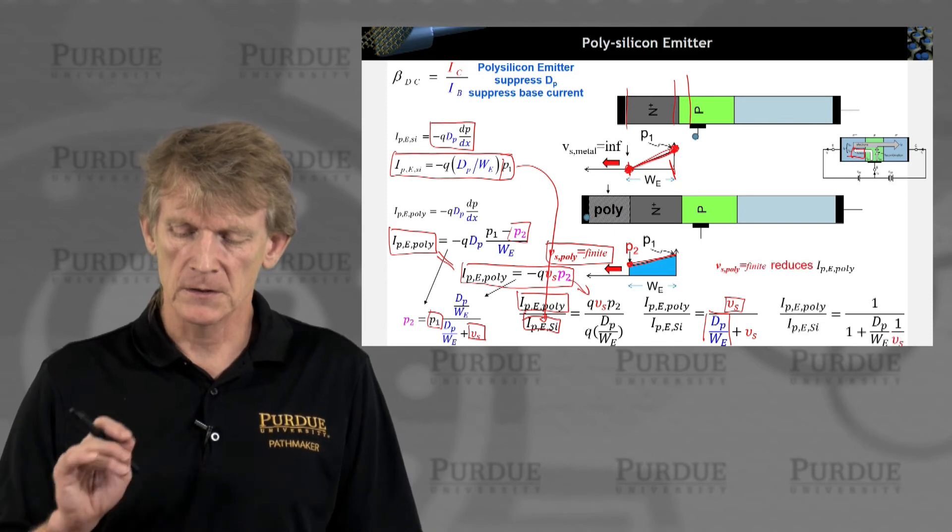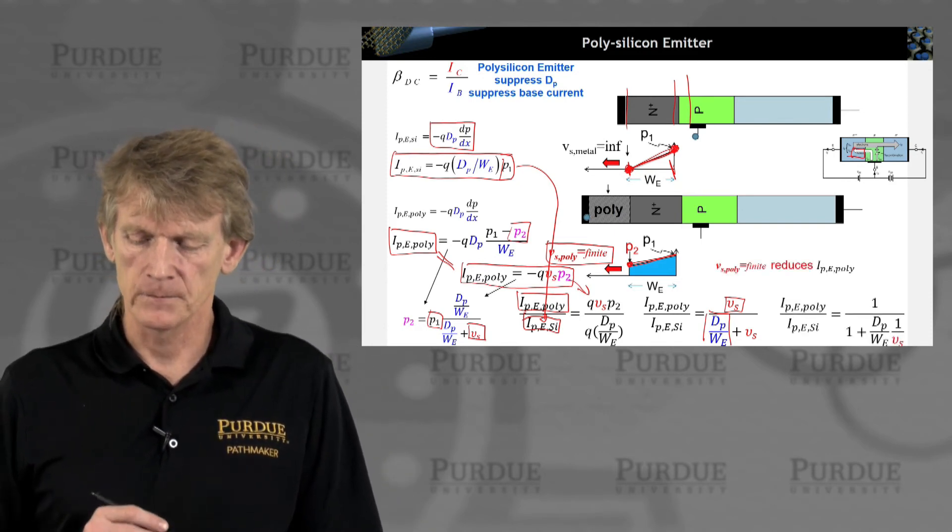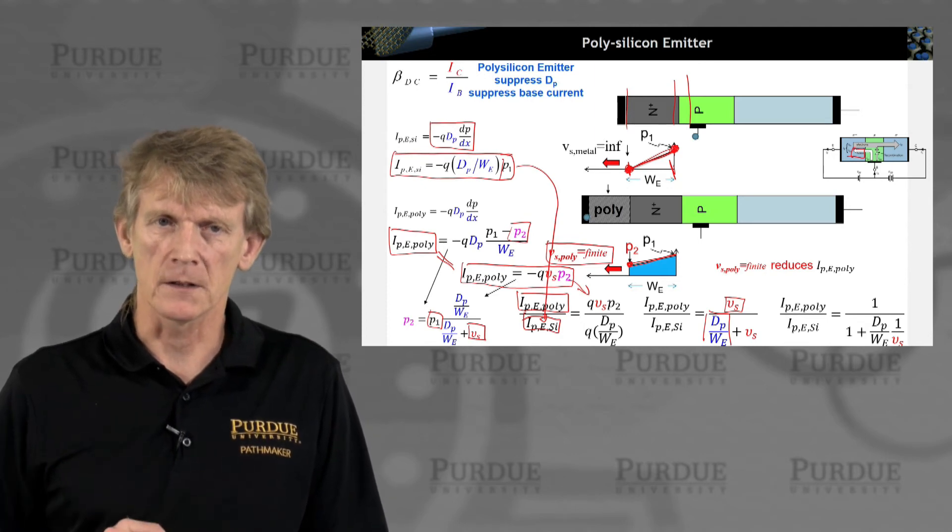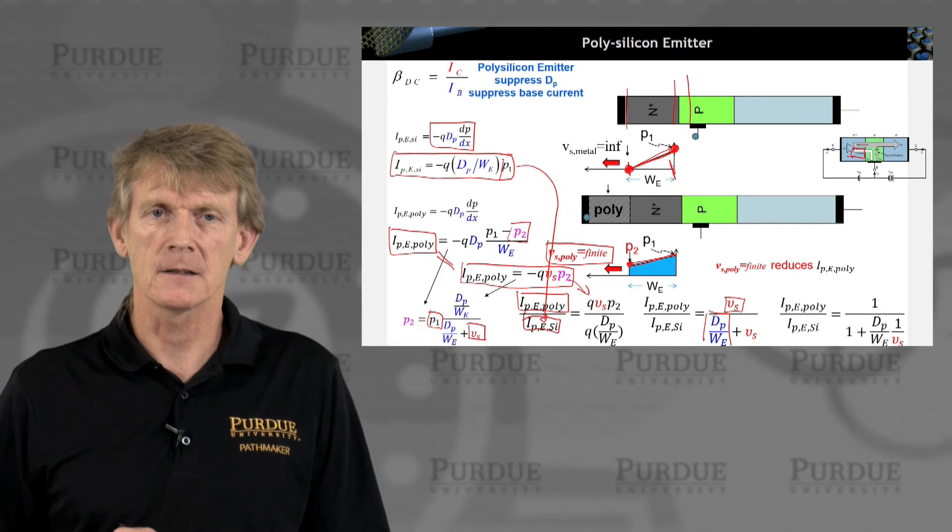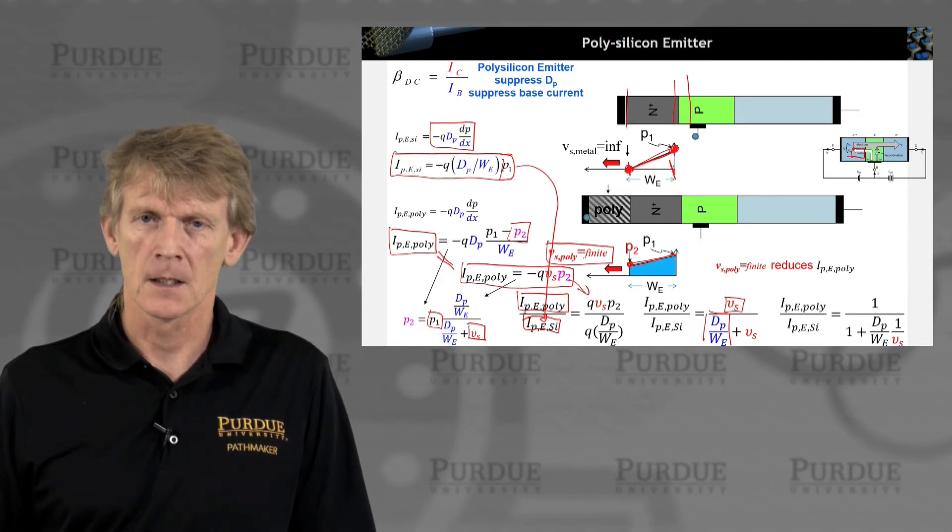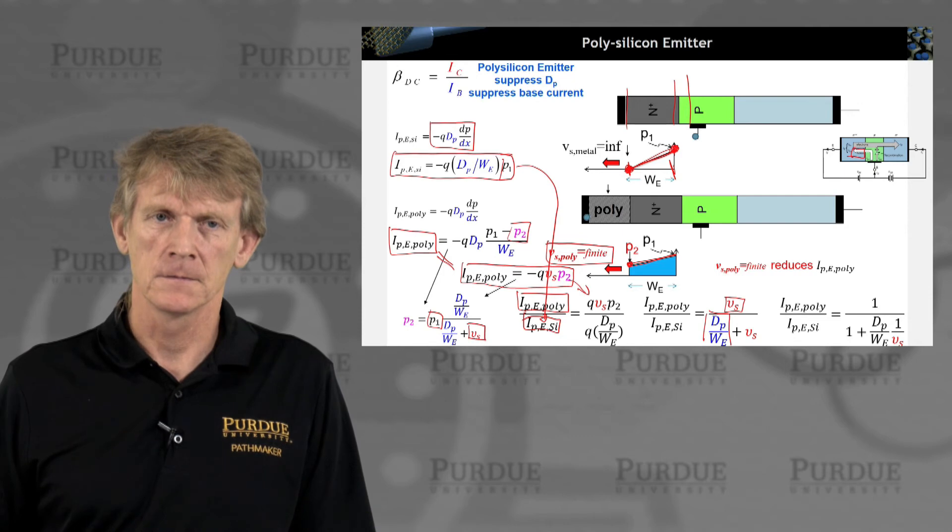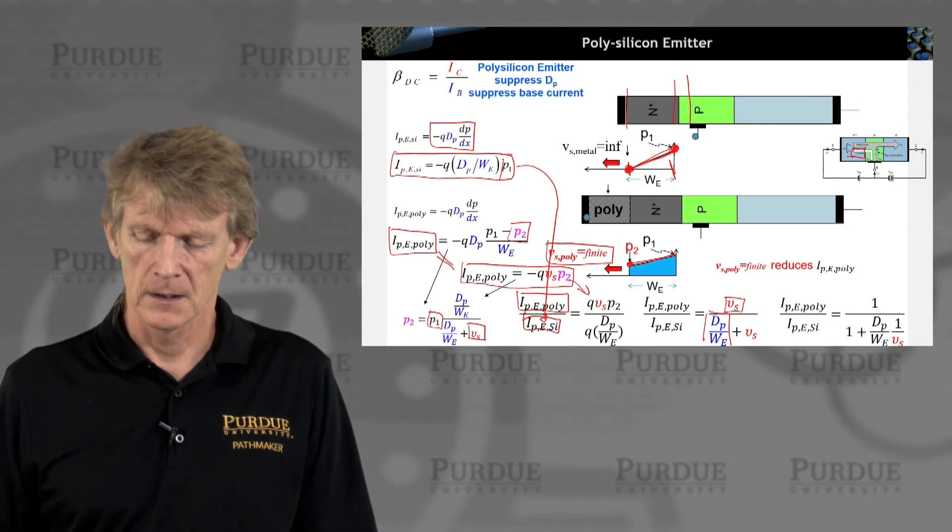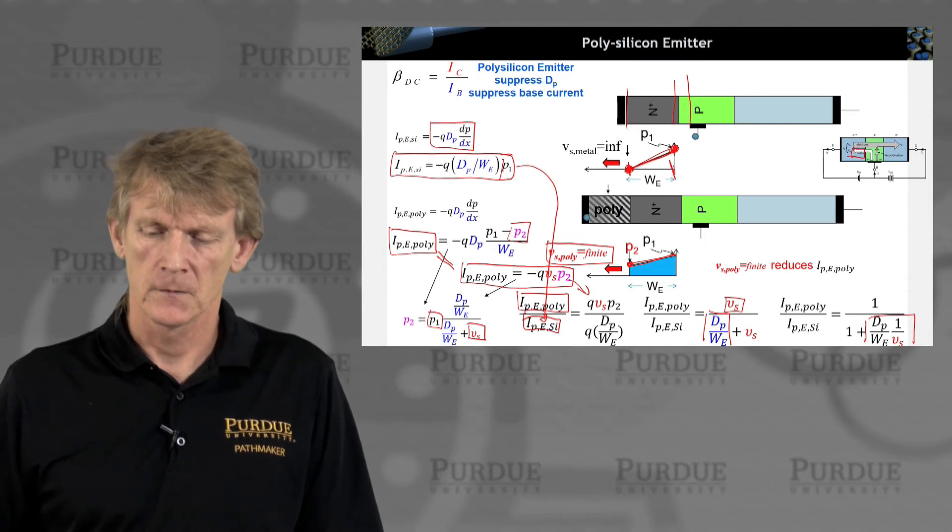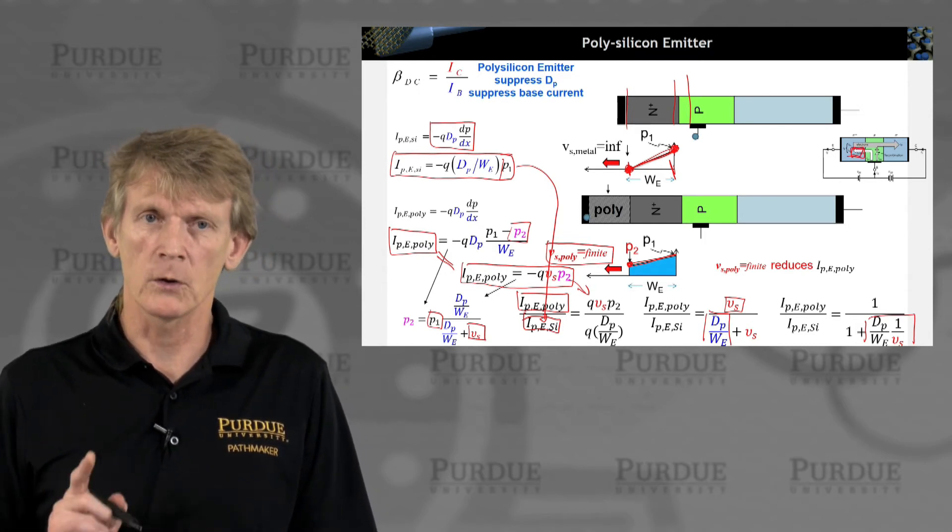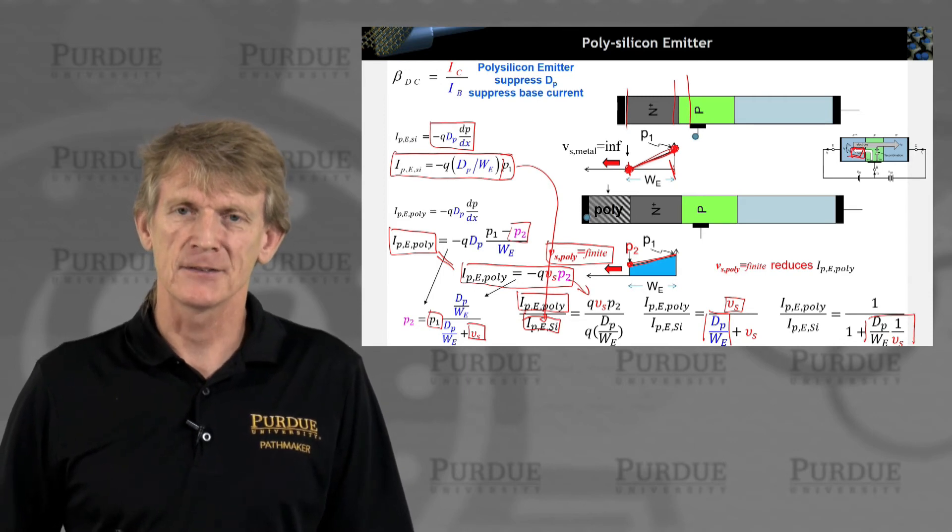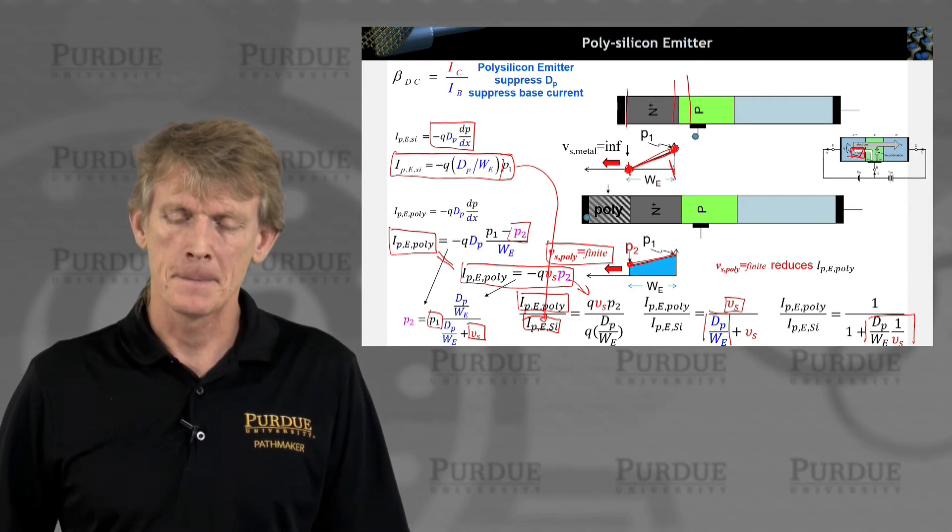And I have a ratio that now depends on the surface recombination velocity in the poly, and the length of WE and the diffusion coefficient of the minority holes. Now, just for argument's sake, let me pull this one under here, the Vs. And I can easily see if Vs is finite. Well, let me start out with, if Vs would still be infinite, like in metal, this term would vanish. Right? So there's no difference. My derivation would be all the same. But, any finite value of saturation velocity, not being infinite, adds a term here, which means the poly current is being reduced. So we're reducing this current over here, which is what we want. So that's a positive effect. And so far, we haven't found anything that is showing up negatively.